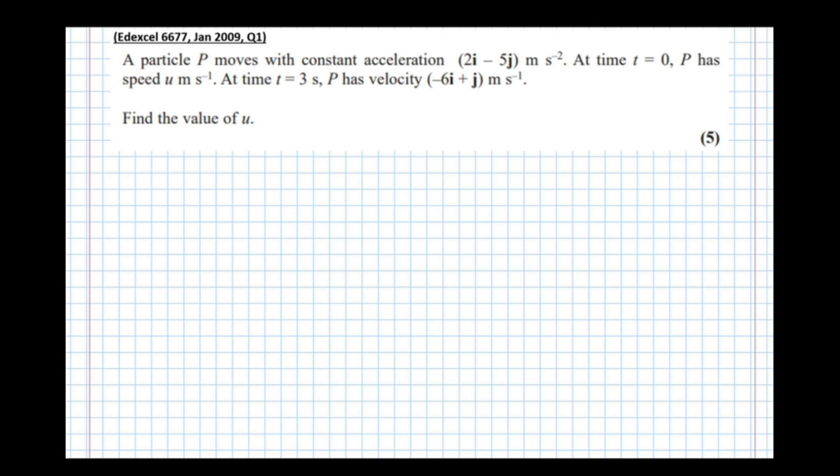We tackle this like an ordinary SUVAT question. Let's write down all the information: s, u, v, a, t. Notice I'm leaving space between them because we're going to write these as vectors. Displacement we don't have any information about.